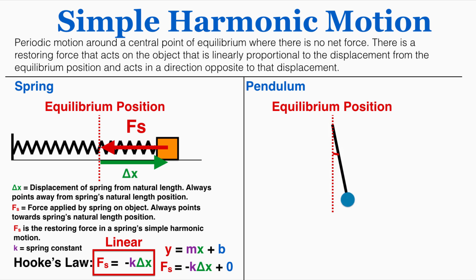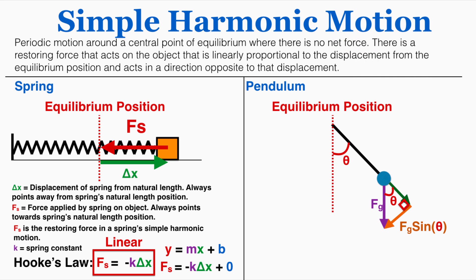Now we're going to look at the pendulum. The pendulum's displacement occurs at a certain angle from the equilibrium position, and the farther away from equilibrium it gets, the more unbalanced the force of gravity will be. There's a force of gravity going straight down, and splitting it into components along the angle of the pendulum, one component is gravity times sine of the angle. The other component is parallel to the tension of the rope, and since the pendulum isn't accelerating in that direction, those forces are balanced — both equal Fg times cosine of the angle. So the only net force on the pendulum is Fg sine theta, pulling the object back toward equilibrium.